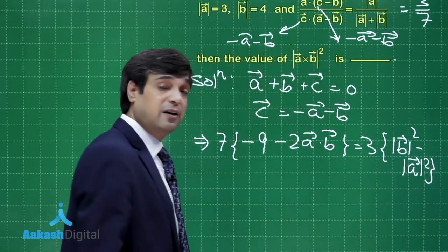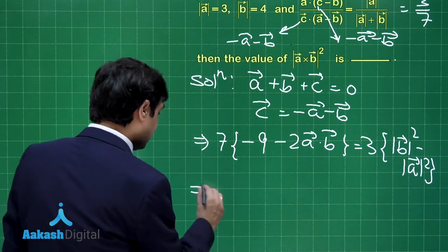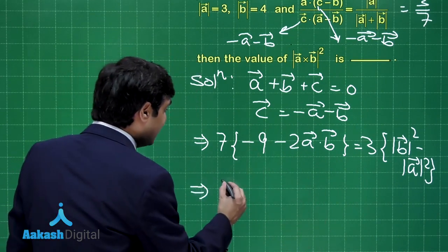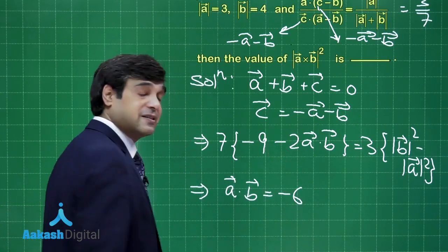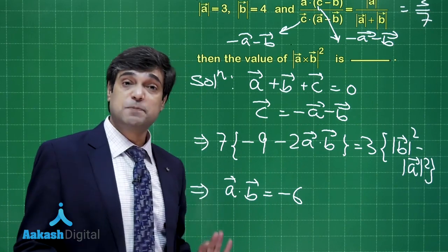I am sure this part is clear. What we are doing? Let's simplify it further. This gives you simply A dot B is equal to minus 6. Now we obtain A dot B as minus 6. What we are looking for? We are looking for A cross B modulus whole square.